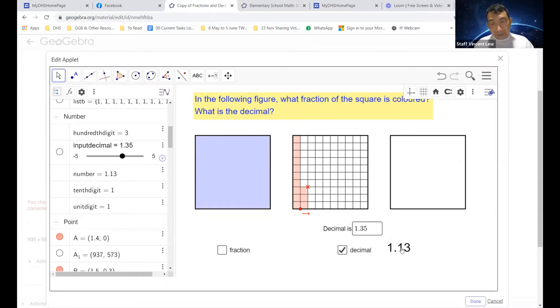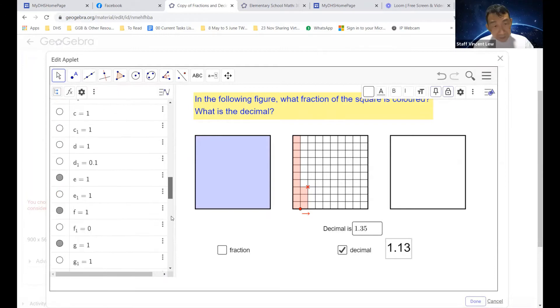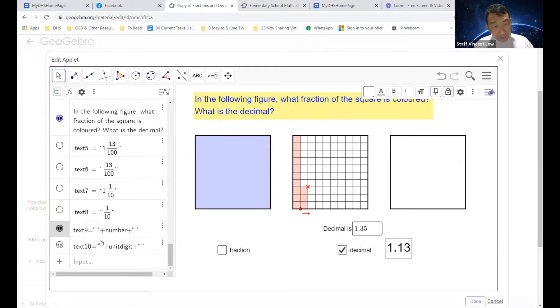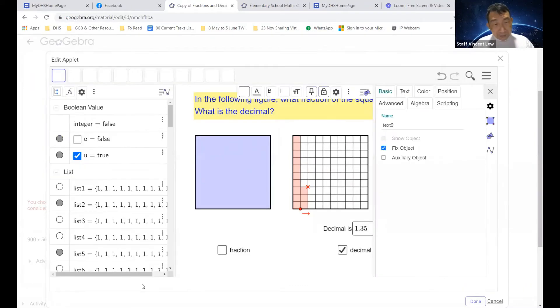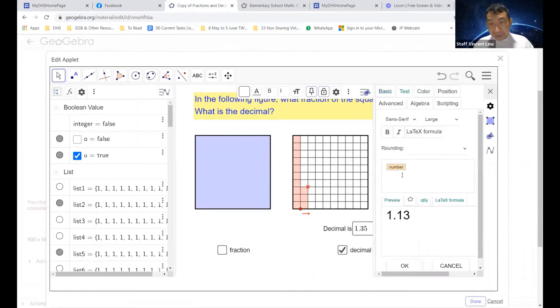Now let's take a look again. What's the name of the variable that gives us the output, or the system's value? Let's click on this text box. Let's check what text box number it is. It's actually text box number 9. Let's click on it and see what is the variable. Under text, you can see, oh, actually 1.13. It's actually the variable called number.